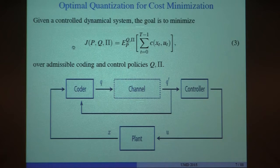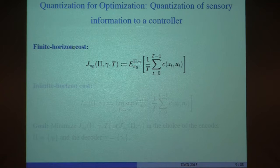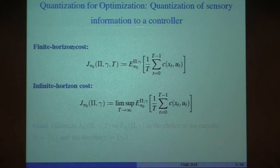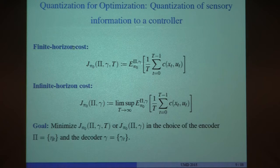The problem is to optimize both the encoder and the controller with the information structure described. For a finite horizon cost problem, you have finite horizon T and want to minimize a cost function. For an infinite horizon problem, you take the normalized costs and take the limit supremum. The goal is to minimize the cost function for an infinite horizon problem subject to the information constraints imposed by the system.